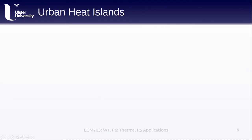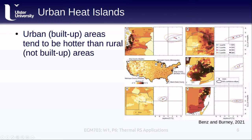Switching topics, another major application of thermal remote sensing is studying urban heat islands. Urban or built-up areas tend to be hotter than surrounding rural areas. This is in part because impervious surfaces, such as concrete or asphalt, tend to be much better at absorbing or holding heat. If you've ever walked across a car park in the middle of the afternoon on a hot summer day, you have no doubt noticed this effect.